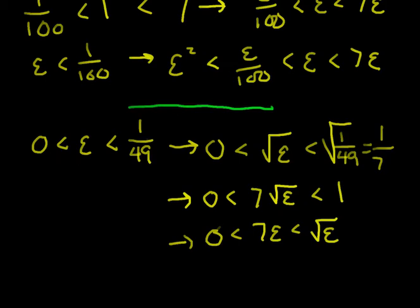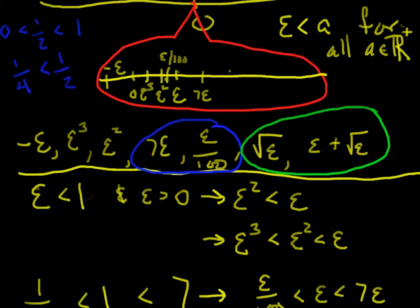So follow me: epsilon is less than one over forty-nine. Take square roots of both sides — that gives the square root of epsilon is less than the square root of one over forty-nine, which is one seventh. Multiply everything through by seven: zero times seven is zero, I get seven times root epsilon, and seven times one seventh is one. Finally, multiply everything by the square root of epsilon: zero times root epsilon is zero, root epsilon times root epsilon is epsilon, and one times root epsilon is root epsilon. So I get that seven epsilon is less than root epsilon, meaning root epsilon sits over here on the number line.